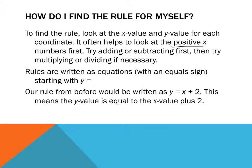To find the rule, we look at the x value and then the y value for each coordinate. I started with the positive numbers and then I moved on. Once I thought I could see a relationship, I tried it to every coordinate. I tried adding and subtracting. Then I tried to multiply and divide. We try adding and subtracting and then multiplying and dividing if necessary. The rules are written as equations, so we always start with y equals.